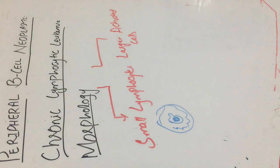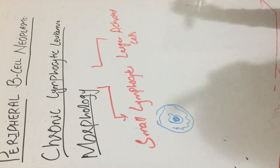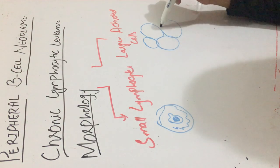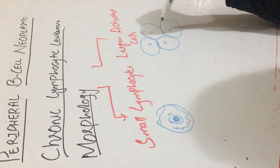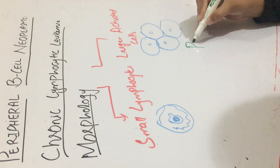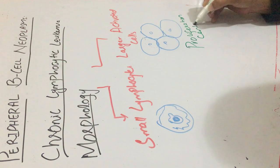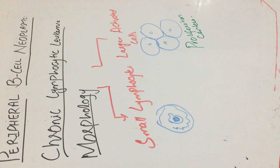The second variety is larger activated lymphocytes. They are mainly present in the form of clusters in a loose configuration — loose aggregates. These loose aggregates are known as proliferation centers. Proliferation centers are pathognomonic of chronic lymphocytic leukemia; if these are present, you can be sure it is most probably chronic lymphocytic leukemia.